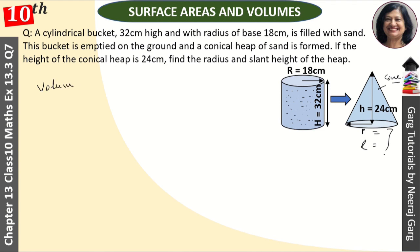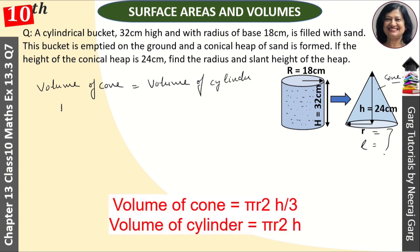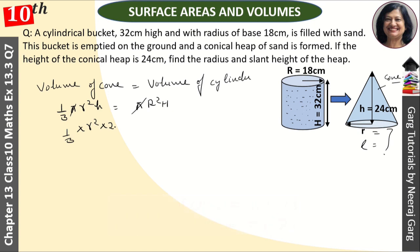Volume of cone equals volume of cylinder. Volume of cone: (1/3)πr²h equals πr²h for the cylinder. π cancels from both sides, giving (1/3)r²h (cone) = r²h (cylinder). We have to find the radius of the cone. h of cone is 24, r of cylinder is 18, and h of cylinder is 32. So this 3 cancels, giving r² = 18 × 18 × 32 ÷ 8.